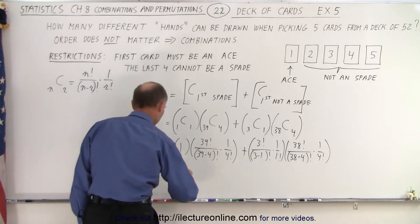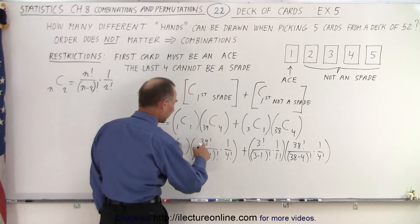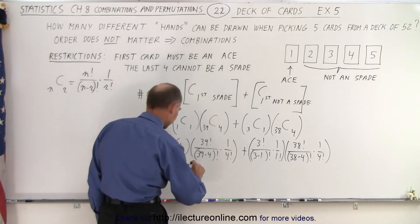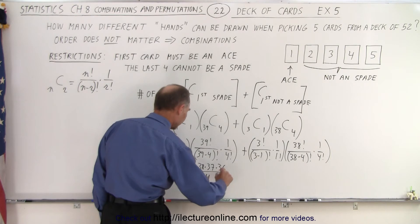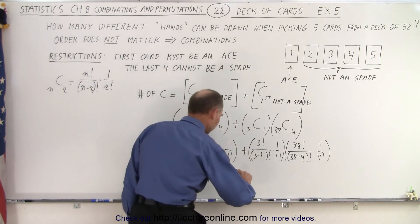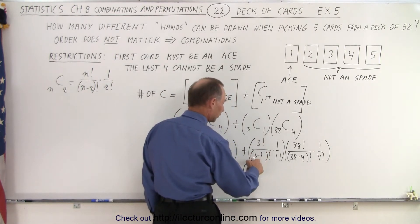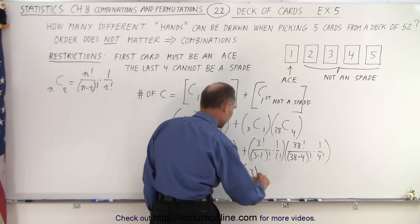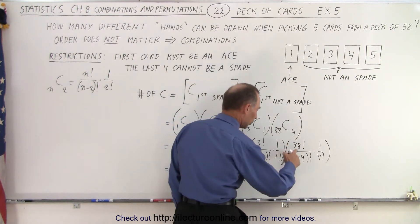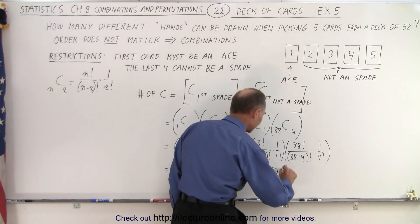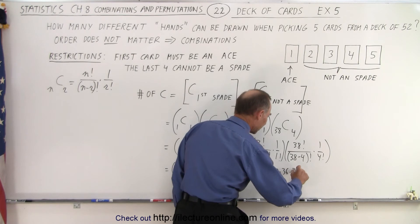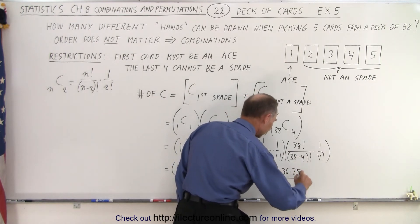All right, so let's simplify that, see what we get. So here we get 1, times 39 factorial, divided by 35 factorial, that leaves us with 39, times 38, times 37, times 36, divided by 4 factorial, which is 24. And then, we add to that, 3 factorial, divided by 2 factorial, that's simply 3, multiply times 38 factorial, divided by 34 factorial, which is 38, times 37, times 36, times 35, all divided by 4 factorial, which is 24.